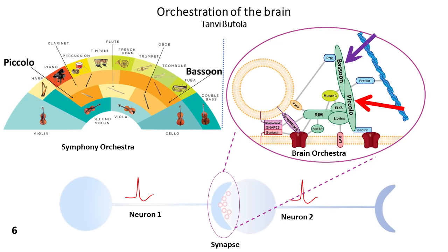Now, this brain orchestra is present in specified regions called the synapse. Synapse is just a fancy term for a region where two brain cells or neurons meet.